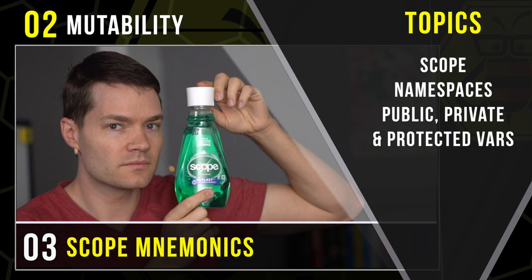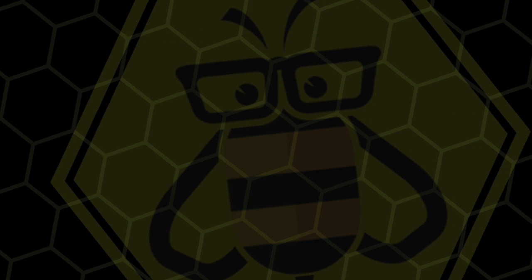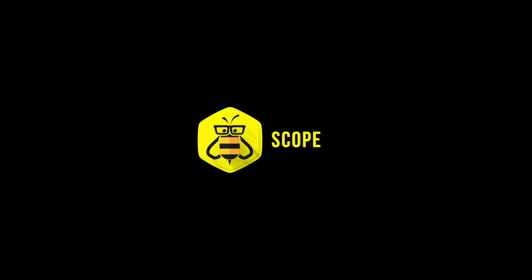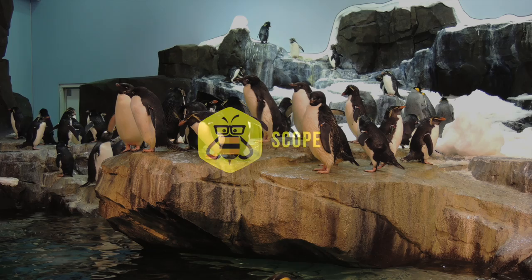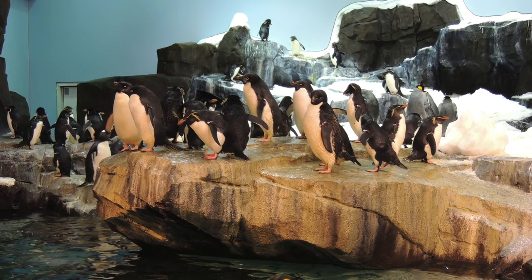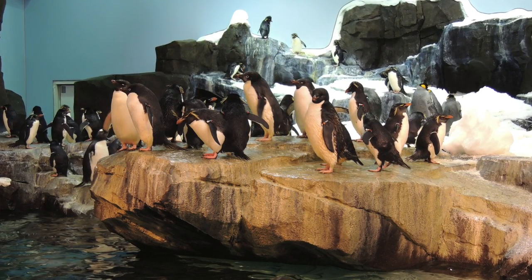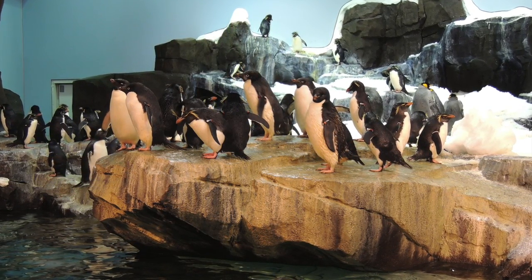Scope. So our first mnemonic today is going to be a penguin enclosure that you would find at a local zoo. It's going to represent our concept for scope.